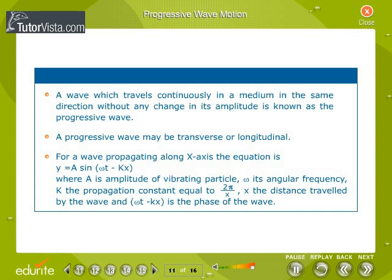A wave which travels continuously in a medium in the same direction without any change in its amplitude is known as the progressive wave. A progressive wave may be transverse or longitudinal. For a wave propagating along x-axis the equation is y equals A sin(ωt - Kx), where A is amplitude of vibrating particle, omega its angular frequency, K the propagation constant equal to 2π/λ, x the distance travelled by the wave, and (ωt - Kx) the phase of the wave.